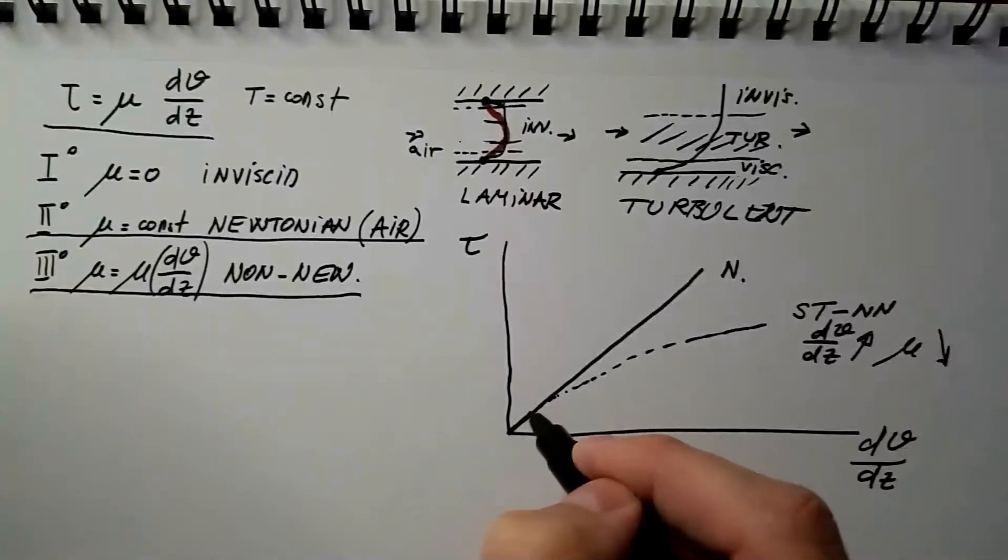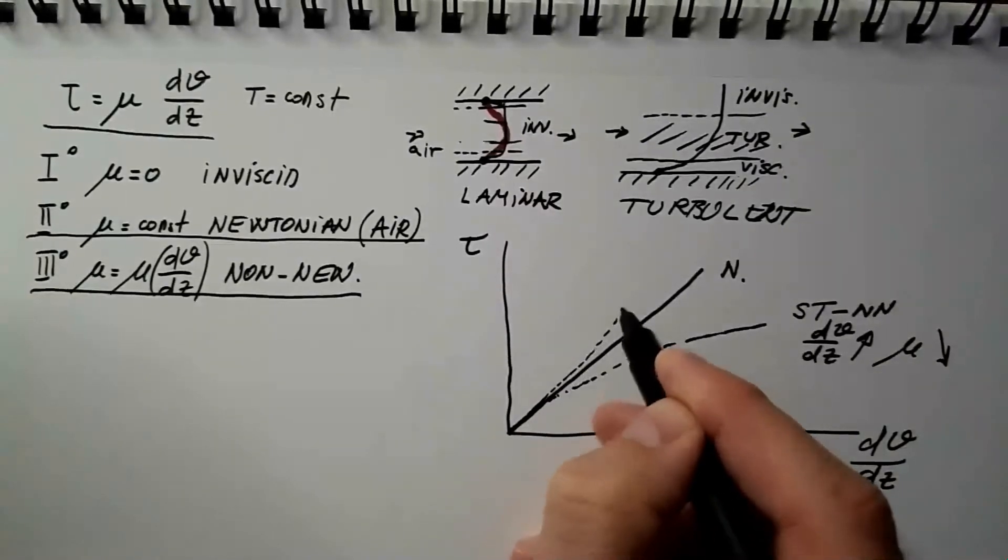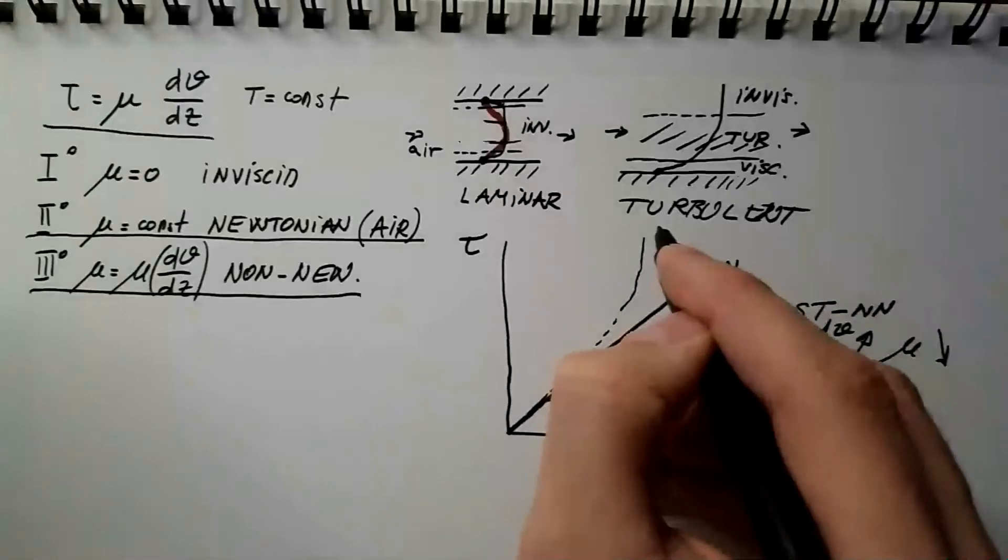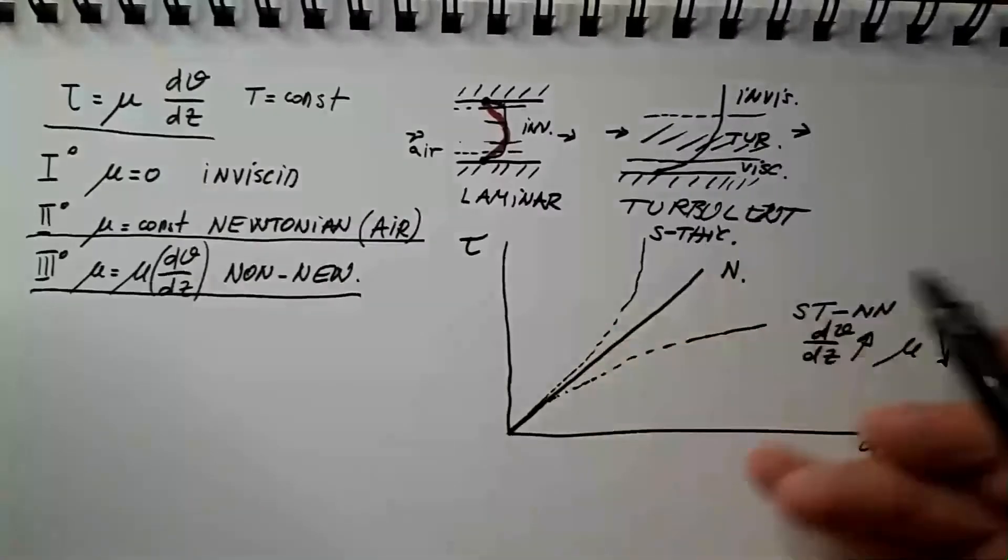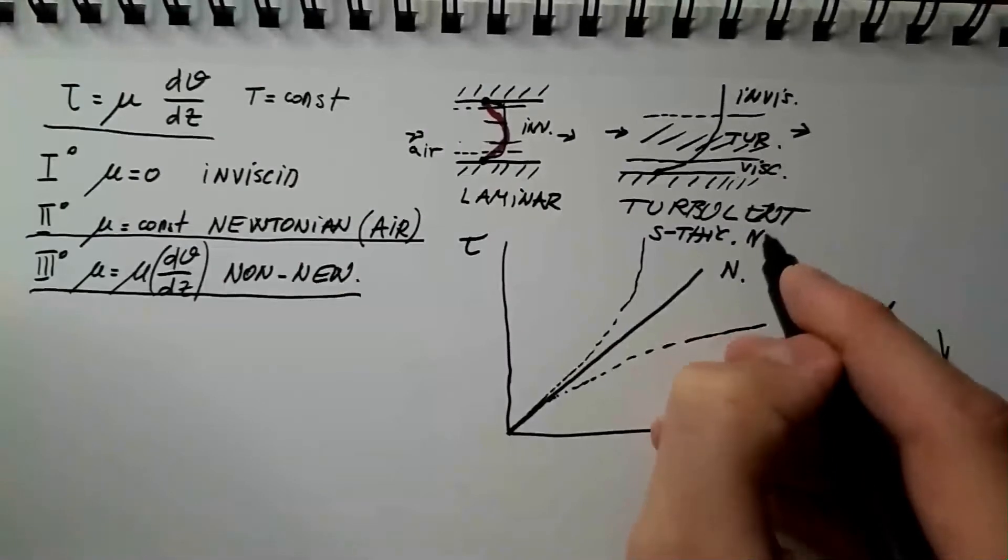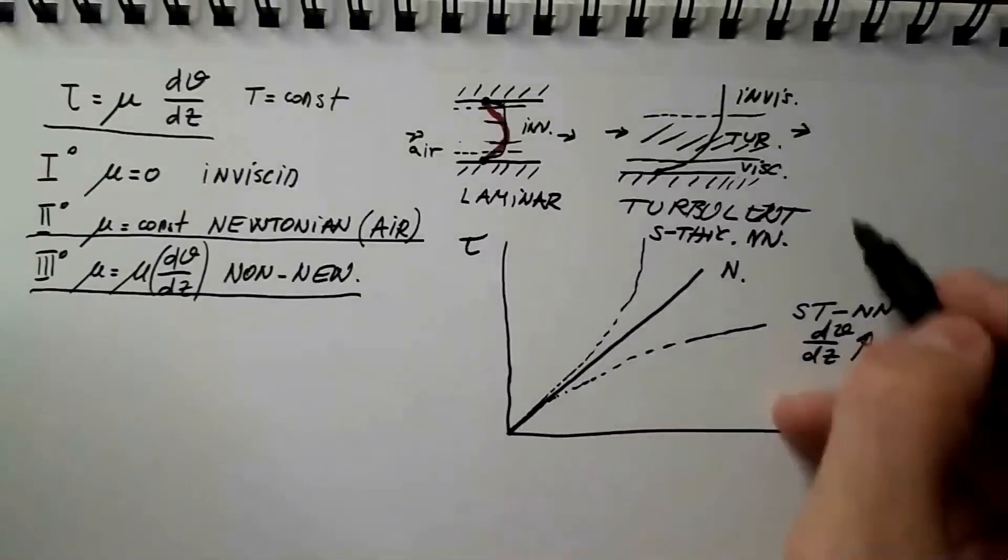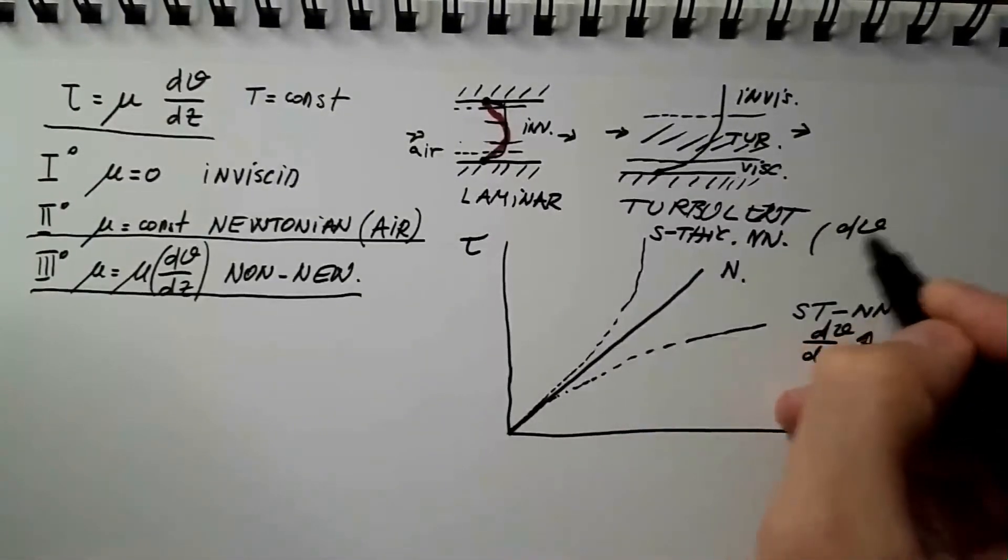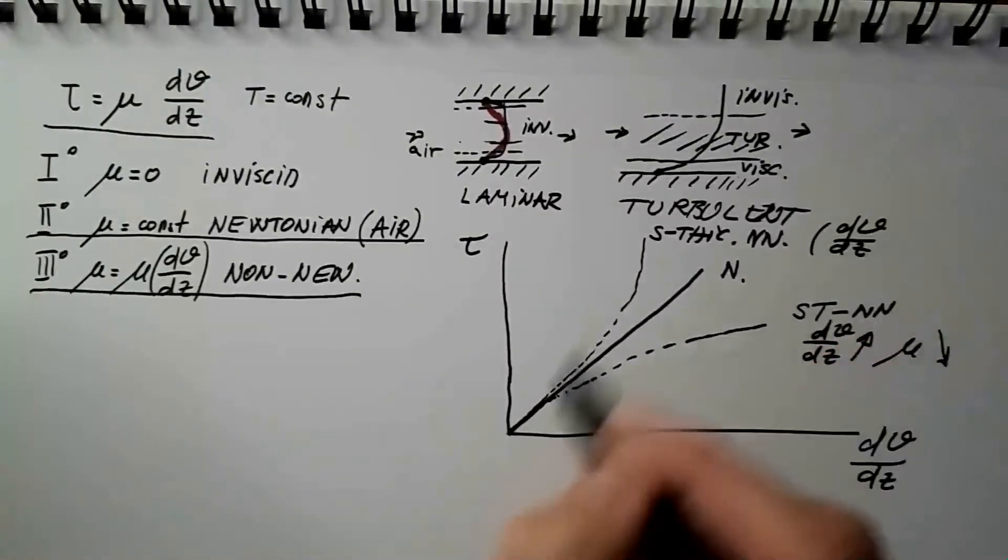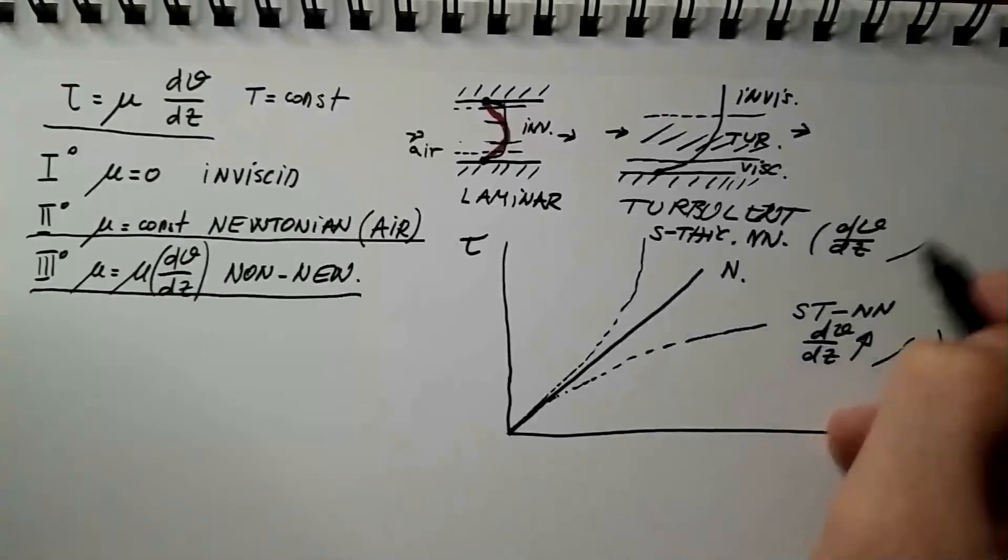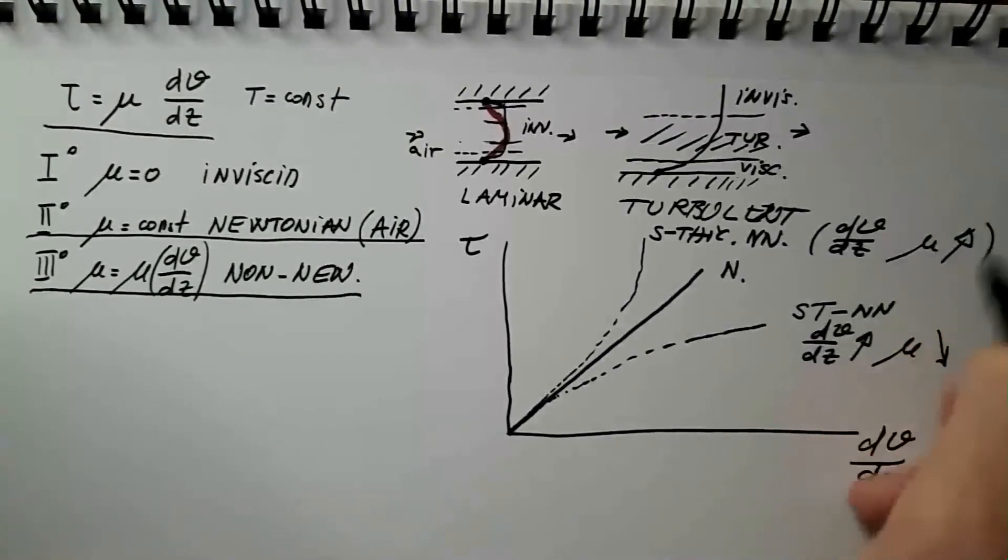Another class of non-Newtonian fluids is called shear thickening. Shear thickening non-Newtonian fluids. And we can see here, as we are increasing dv over dz, rate of shear deformation increases, mu consequently significantly increases.